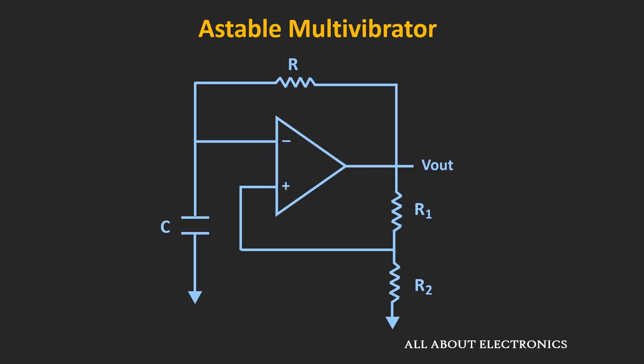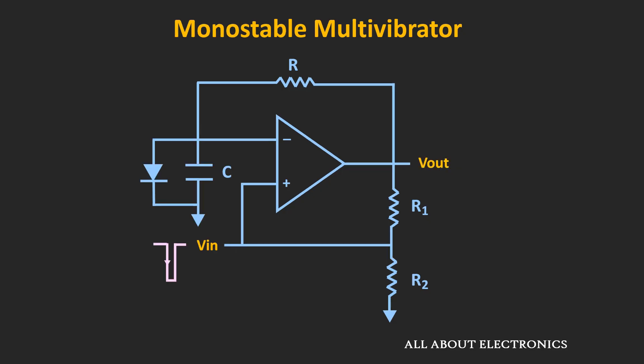Now if you have watched the last video on the astable multivibrator, then you might be aware of its design. By slightly modifying that circuit, it can be converted into the monostable multivibrator. As you can see here, the diode is connected in parallel with the capacitor and the trigger signal is applied at this node. So let's understand the working principle of this circuit.